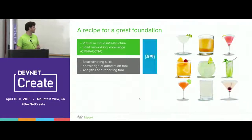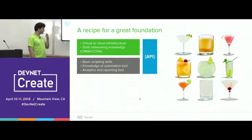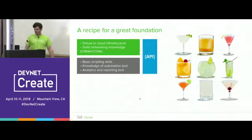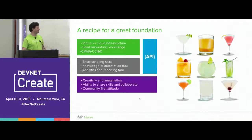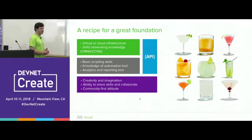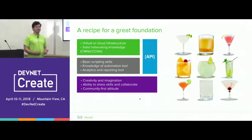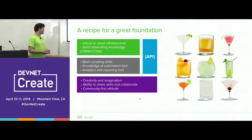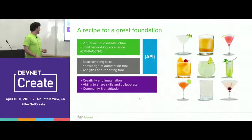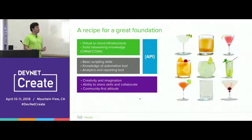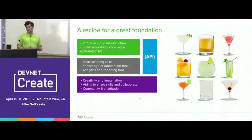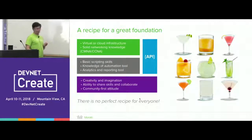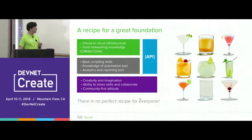One thing that's definitely important is knowing the APIs. If a network engineer and a software engineer can't communicate through a common API, that's the key to all of it. But there's something else missing — spirit and creativity. That's really the most important thing. The great part about bringing different skill sets together is making sure it inspires creativity, that everyone has the ability and willingness to share their skills, collaborate, and has a community-first attitude.